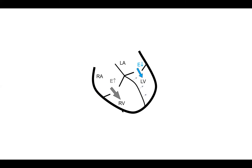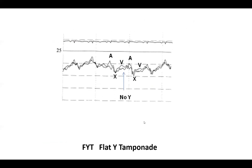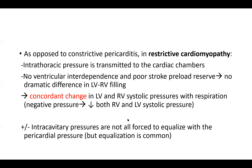Another very important thing in restrictive cardiomyopathy: unlike constrictive pericarditis, the right and left heart have limited preload reserve — meaning in inspiration and expiration, their filling is not going to change much because they are restricted. They don't get respiratory variation in flow because they don't have much preload reserve. They cannot fill that much anyway — they are too stiff.